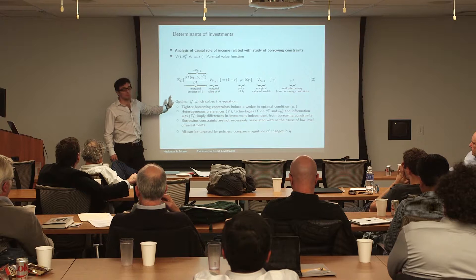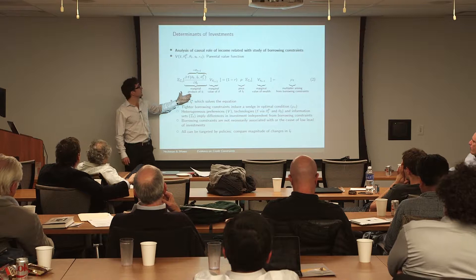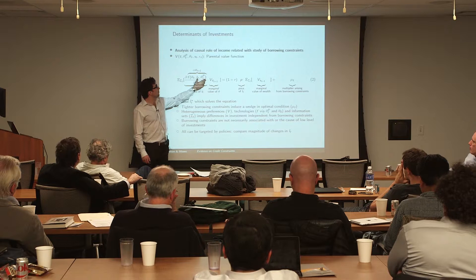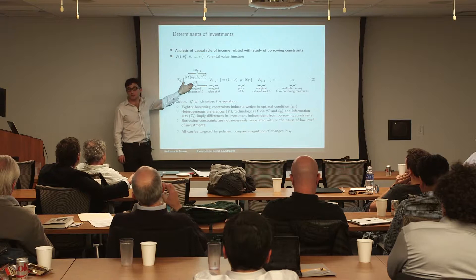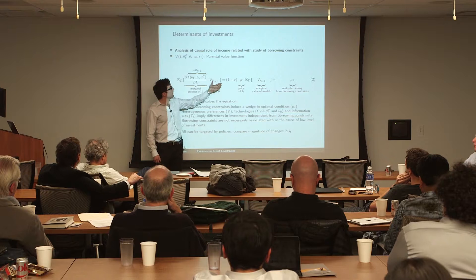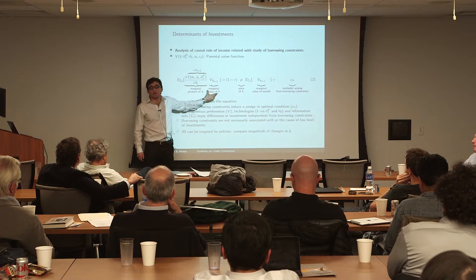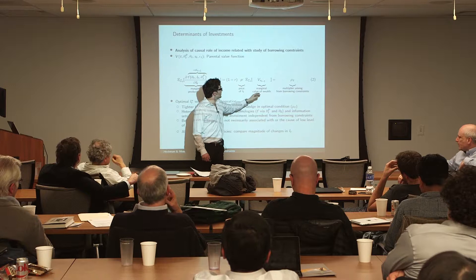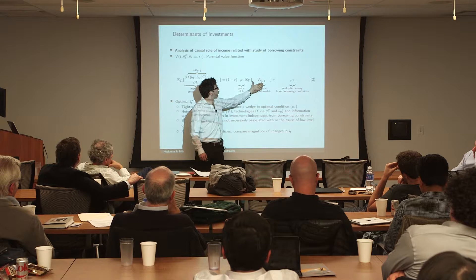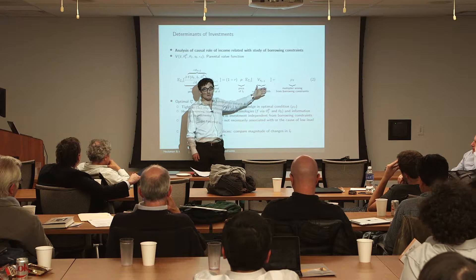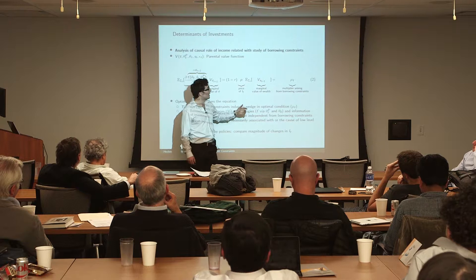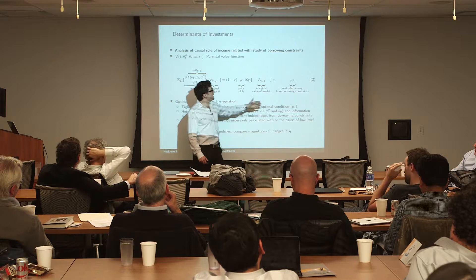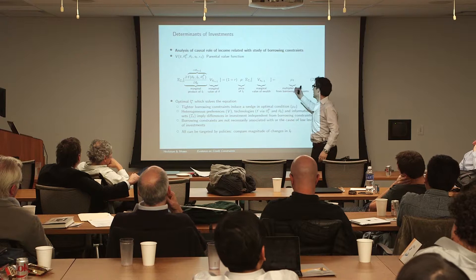The marginal benefit of investment is equated to the marginal cost. We also have the marginal utility of wealth — whether to spend the money on investment or keep it in the bank for future investment or consumption. There is also a multiplier that ensures this equation holds even when one cannot achieve the potentially optimal amount of investment due to borrowing constraints. Those borrowing constraints can arise simply from the fact that this is a finite horizon problem, implying a natural borrowing limit given the expected minimum income flow.